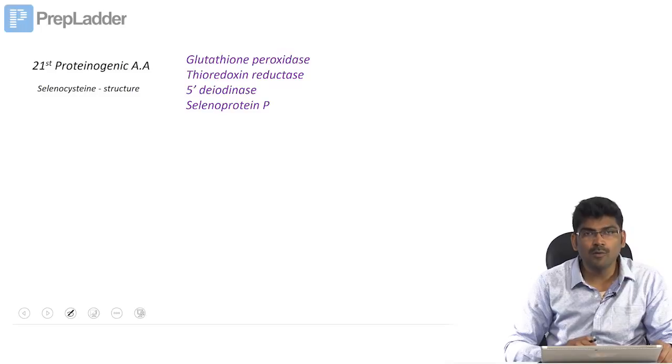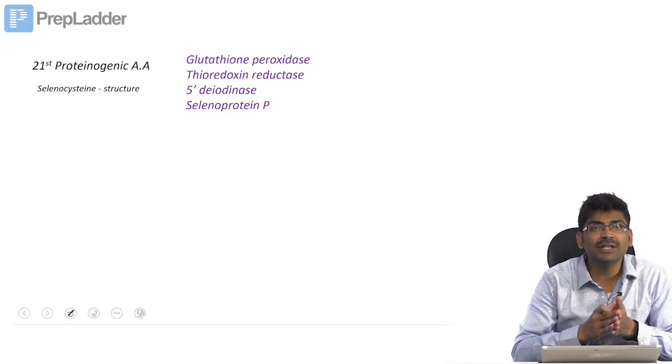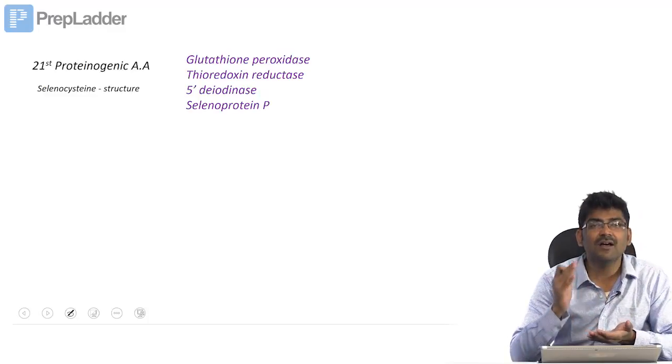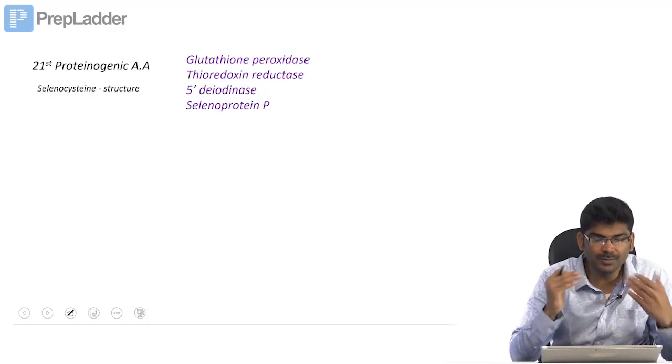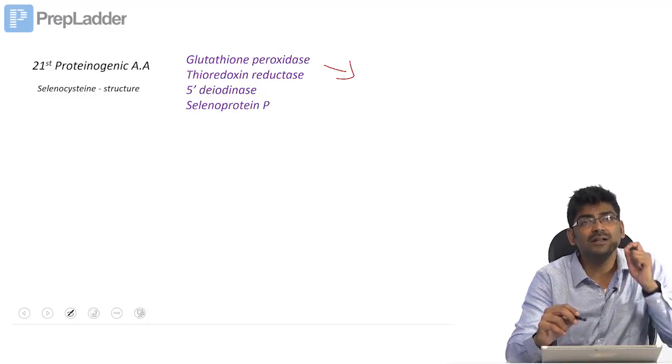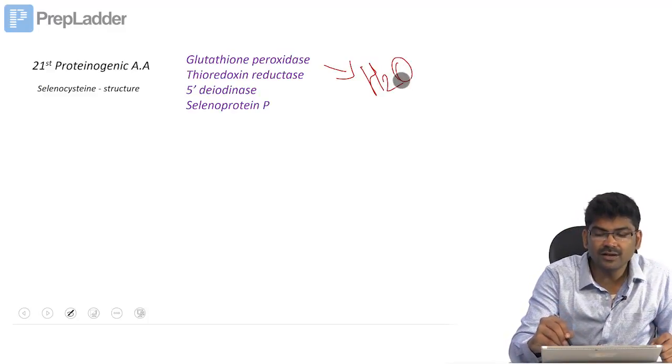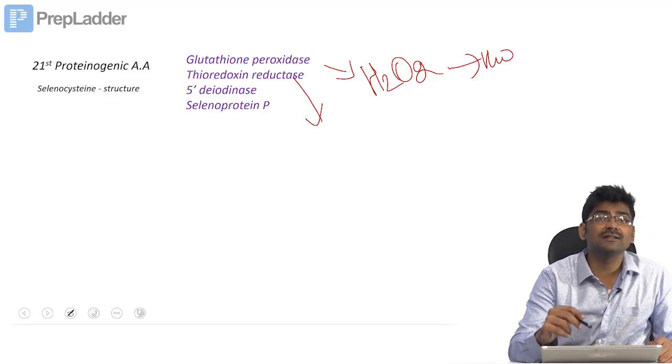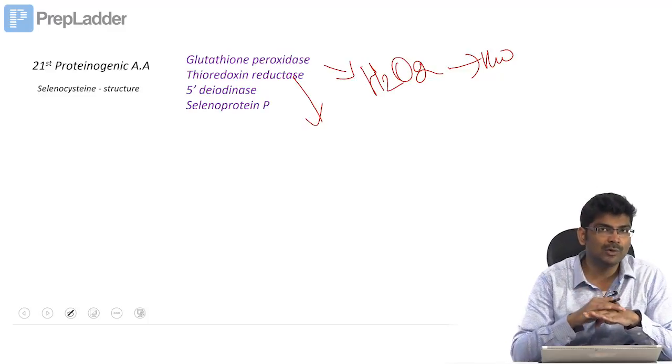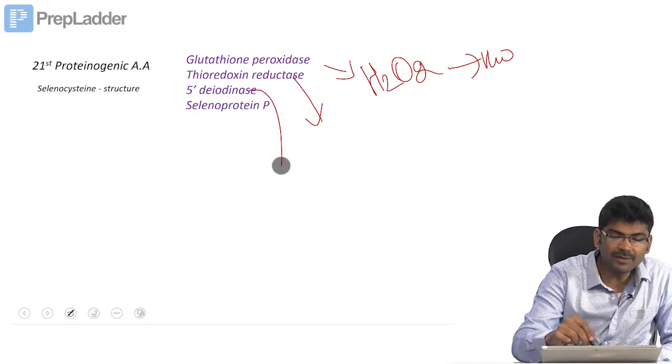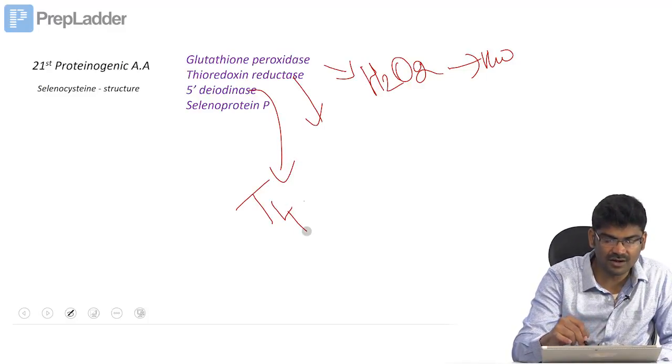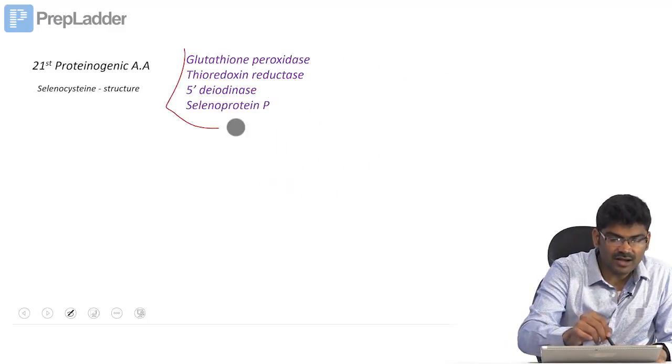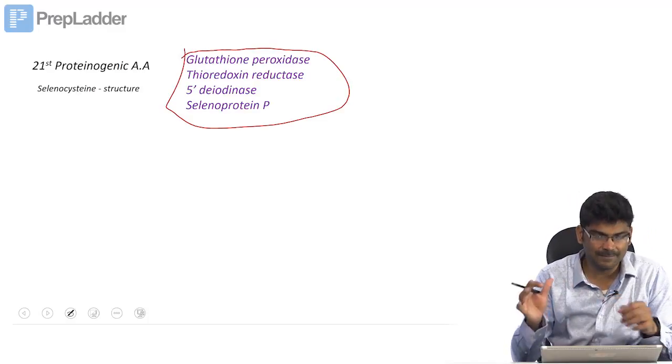Selenocysteine is found in some of the proteins and enzymes in the body. They are glutathione peroxidase, thioredoxin reductase, 5-prime deiodinase, and selenoprotein P. Glutathione peroxidase is very important in RBCs to detoxify hydrogen peroxide. Thioredoxin reductase is important for the enzyme ribonucleotide reductase. 5-prime deiodinase is involved in the peripheral conversion of T4 to T3. This is a high yield concept for exam.